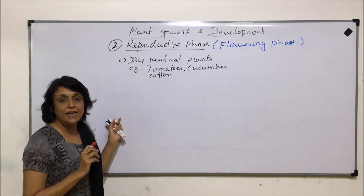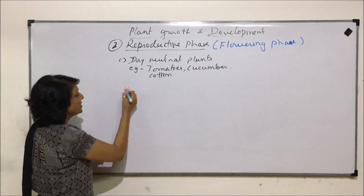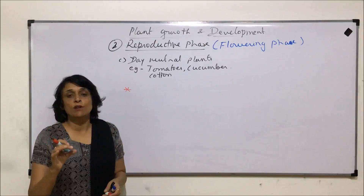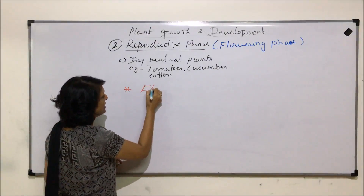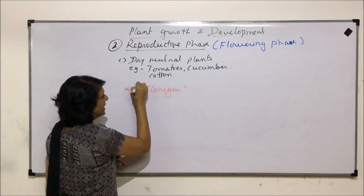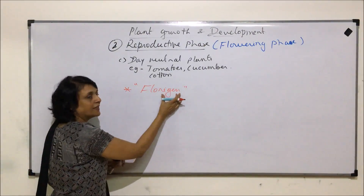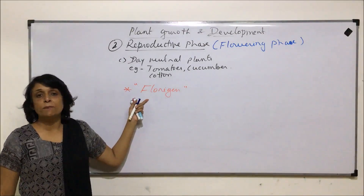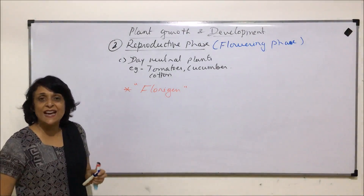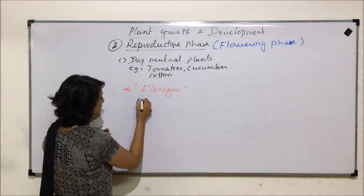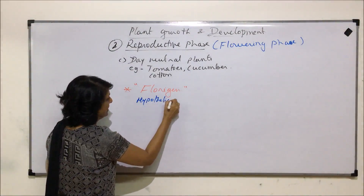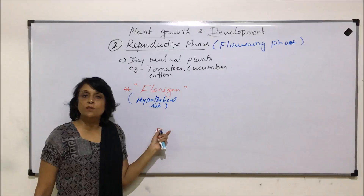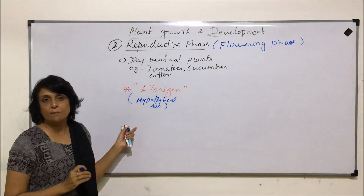Scientists believe that there is a substance which is responsible for perceiving light and it stimulates flowering. That substance is known as florigen. The name florigen means flower-generating, or a substance which helps in production of the flower. This substance has not been isolated yet and that is why it is considered a hypothetical substance.